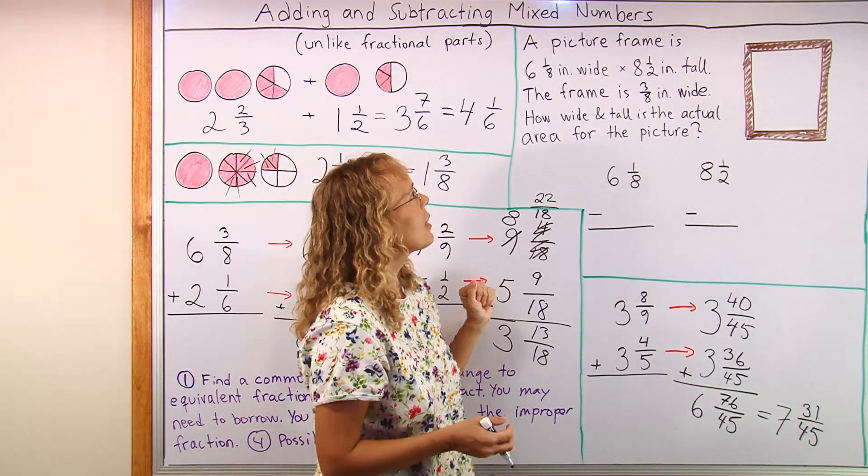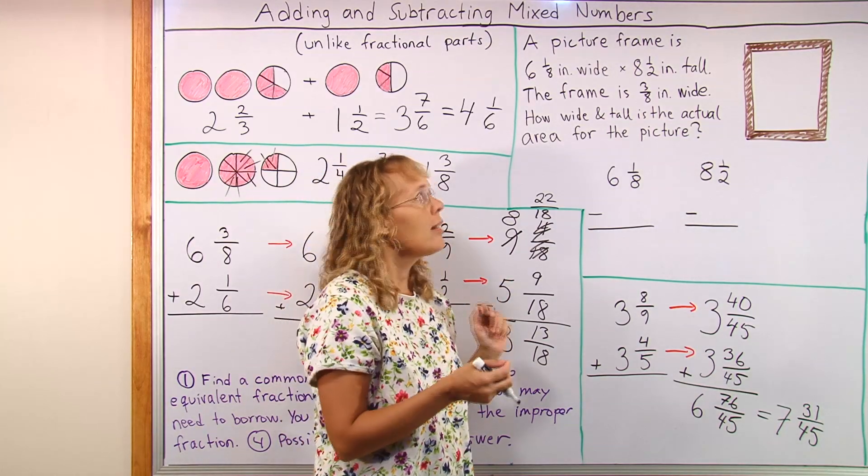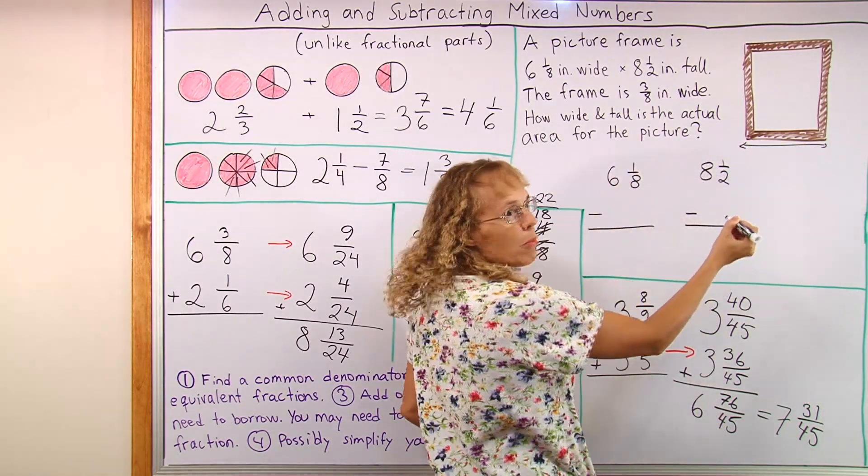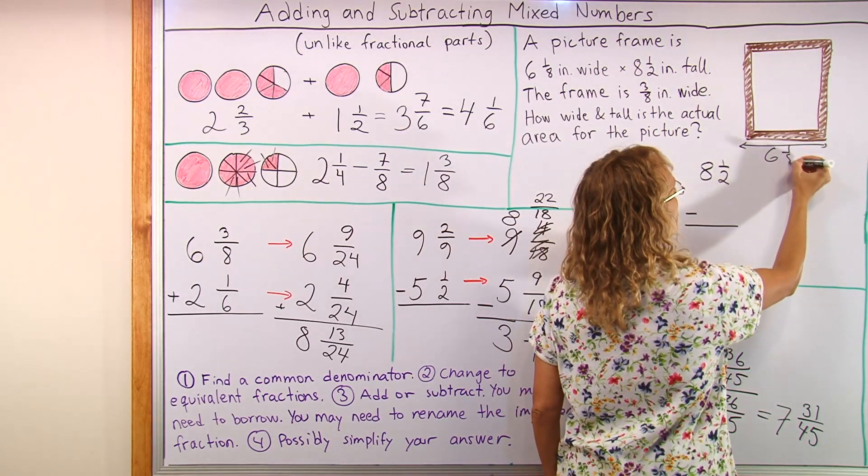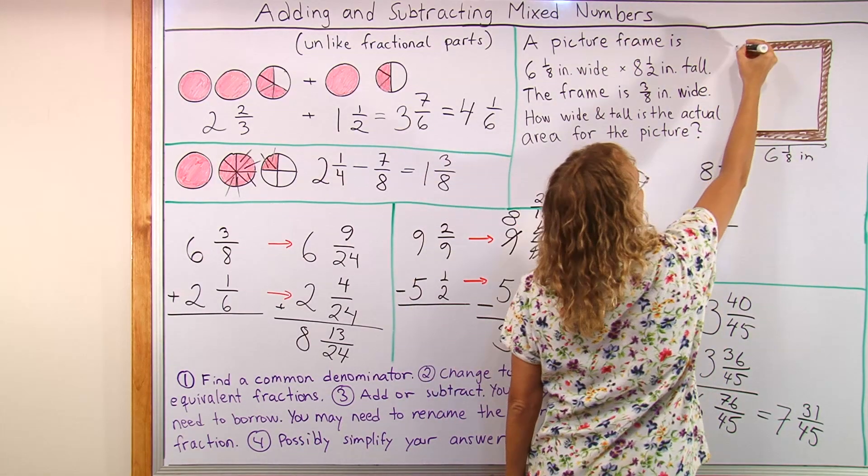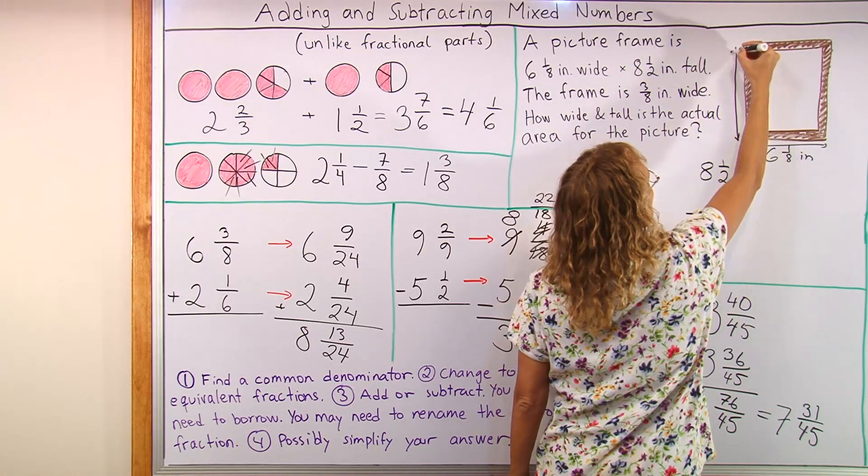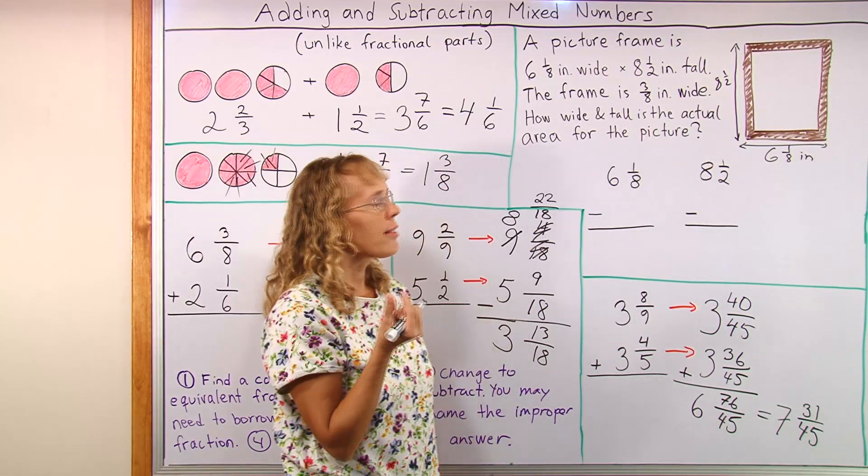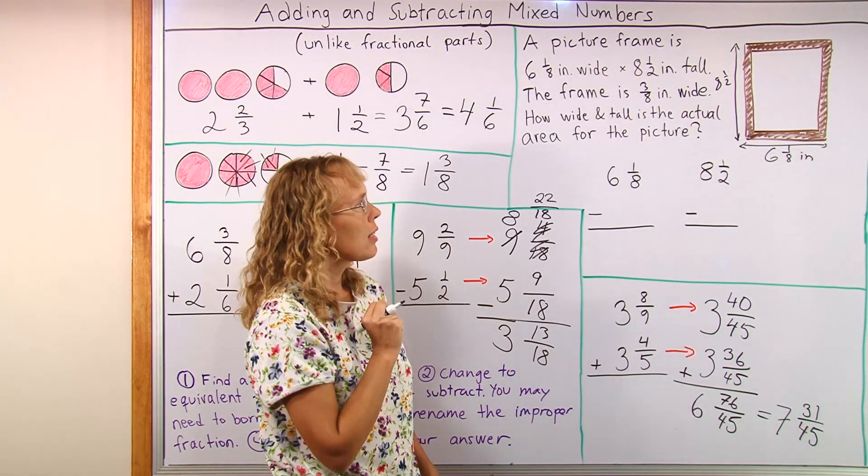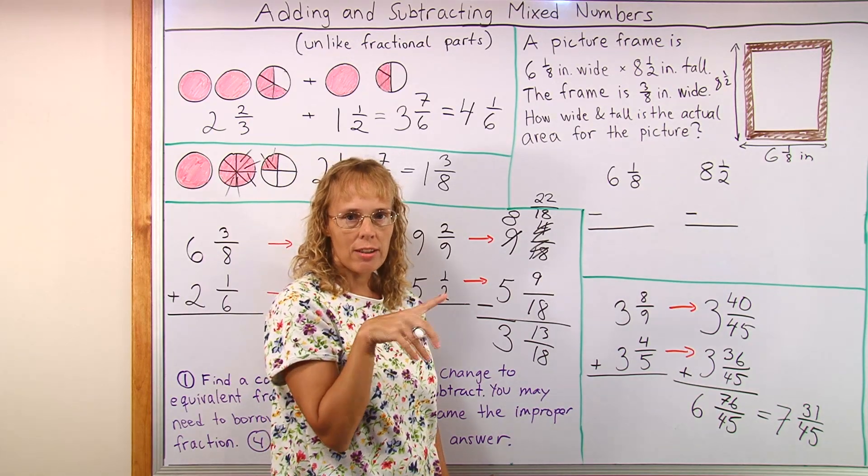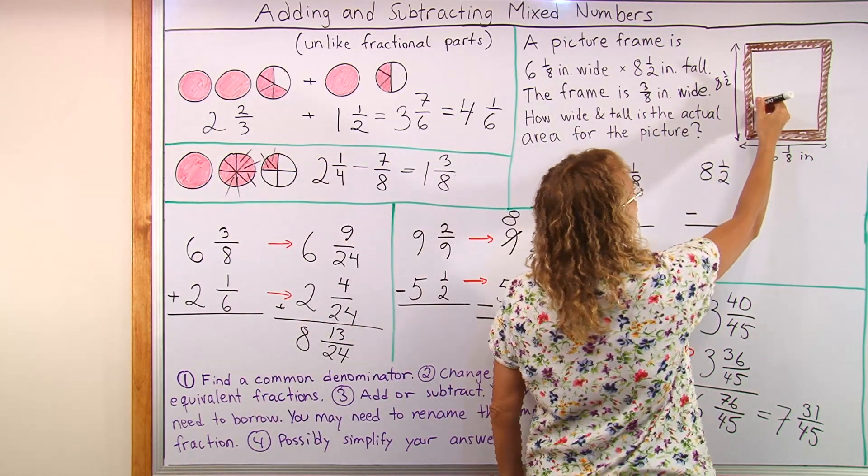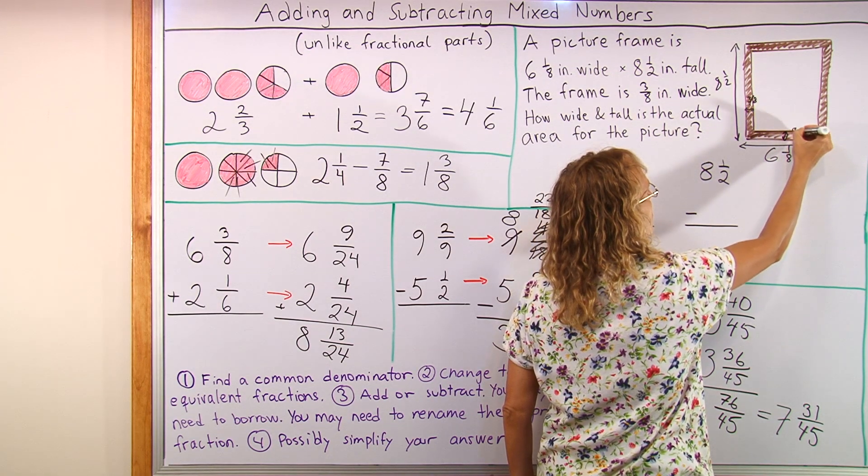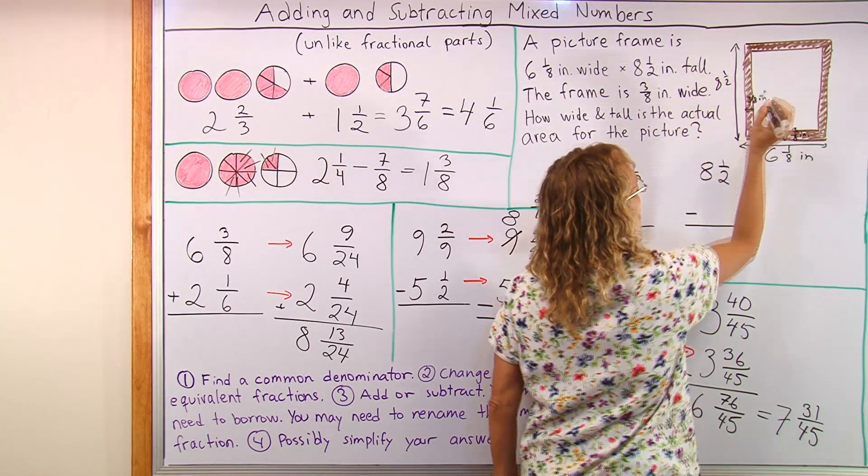We have a picture frame that is 6 1/8 inches wide and 8 1/2 inches tall. So this here, the total width is 6 1/8 inches. And then the frame itself is made of wood that is 3 1/8 inches wide. And the question is asking how wide and tall is the actual area for where the picture goes. This frame here, this here is 3 1/8 inches wide, or this way too.